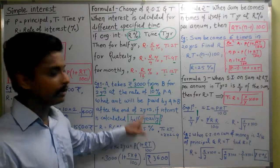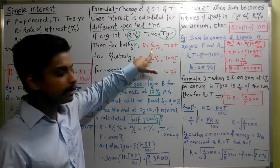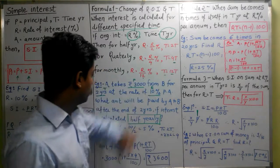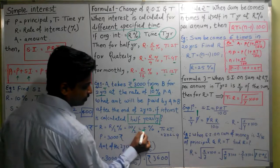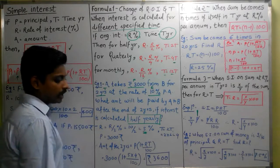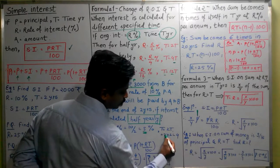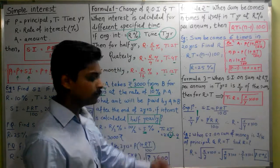For half yearly, whatever the original rate is, divide it by 2, and whatever time duration is given, multiply it by 2. So R is equal to R upon 2%, which is 10 upon 2, which is 5%. So R value we got. Similarly, T is equal to 2 times T, which is 2 into 2. So final answer is T equals 4.